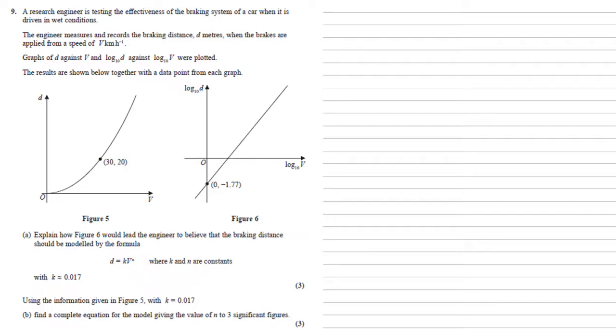For part a we need to explain how figure six would lead the engineer to believe that the braking distance should be modeled by the formula d equals k v to the n where k and n are constants with k roughly equal to 0.017.